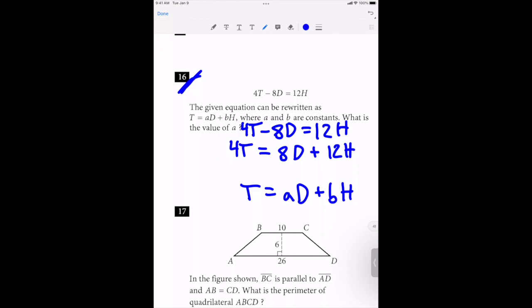And so I get 1T is equal to 2D plus 3H. And now I can see pretty clearly that my 1 matches up with the 1 there.